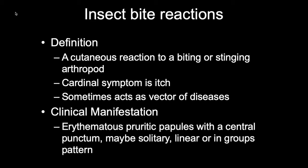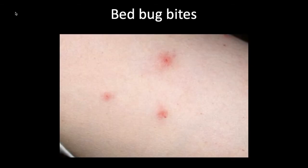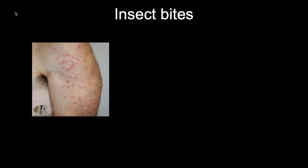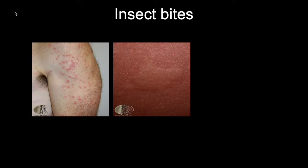Here are some photos of insect bite reactions. This is due to bed bugs. This photo shows multiple erythematous papules, discrete and scattered in the upper torso area, while in a group pattern at the lower part of the torso. Sometimes lesions may be numerous, or they may just be described as wheal-like lesions.